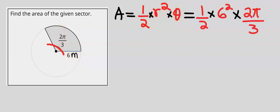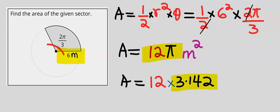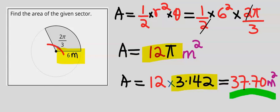Next, simplify the results. The 2s cancel, giving an answer of 12π, left in terms of π. The radius is in meters, so the unit is meters squared. Since π is 3.142, the real value of the area is 37.70 meters squared, to two decimal places.